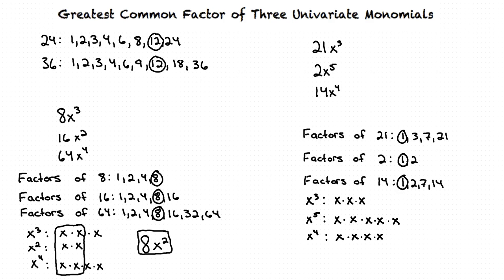From this list, we can see that the Greatest Common Factor is x times x times x, or x cubed. So the only factor the coefficients have in common is 1, but there are variables that the monomials do have in common. The Greatest Common Factor of the three monomials is x cubed.